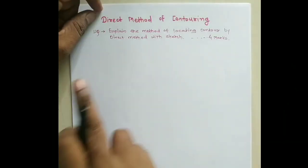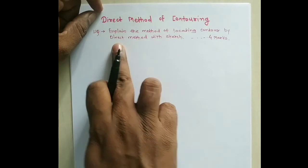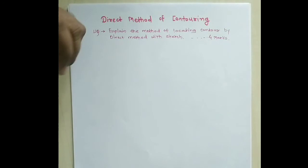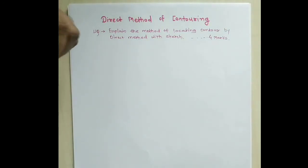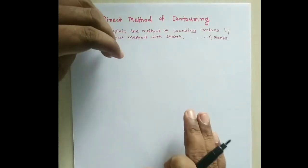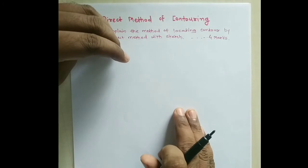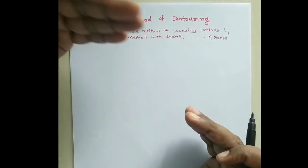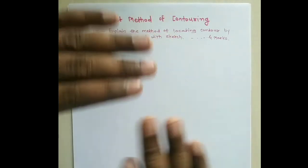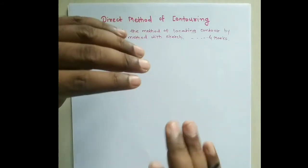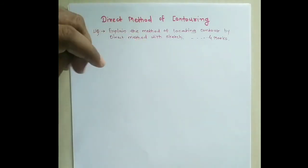Now let us look at the direct method of contouring — this question is asked in university papers for four marks. In the direct method, whatever contour we need to plot is directly traced on the ground. Whatever contour we need to plot, we trace it directly on the ground surface.